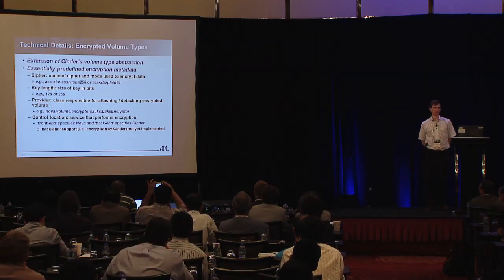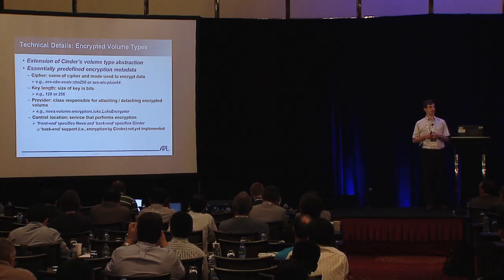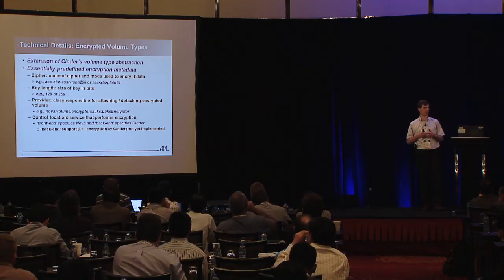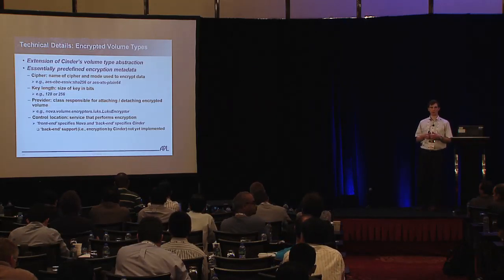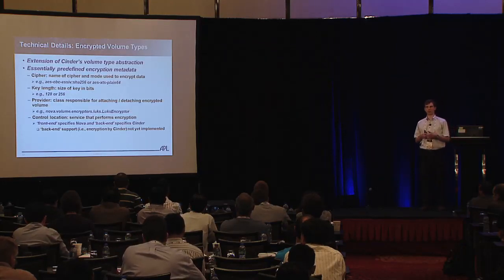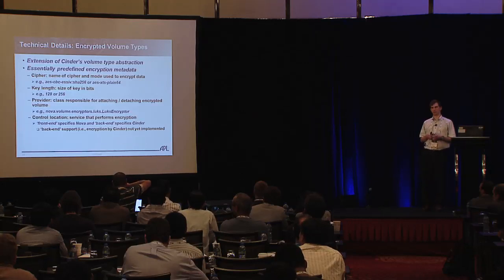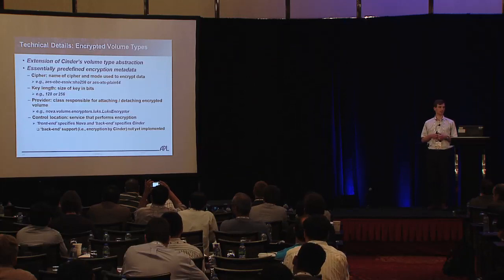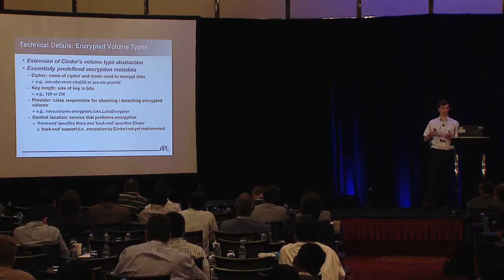Encrypted volume types are essentially an abstraction of Cinder's existing volume types. We need some additional metadata — such as the cipher, the key length, the provider, and the control location — in order to know how to use these with encryption. For the cipher, we're looking for the name of the cipher and the mode of operation — we support anything supported by cryptsetup currently. Two examples are AES cipher block chaining with encrypted salt initialization vectors, and XTS mode, which is what NIST recommends for full disk encryption solutions.